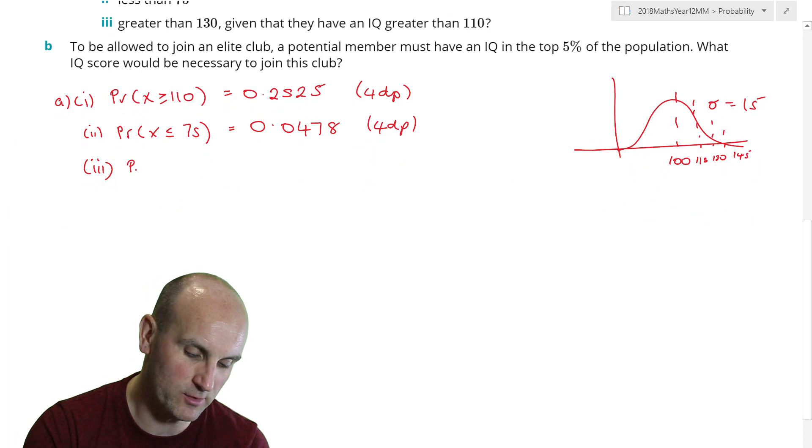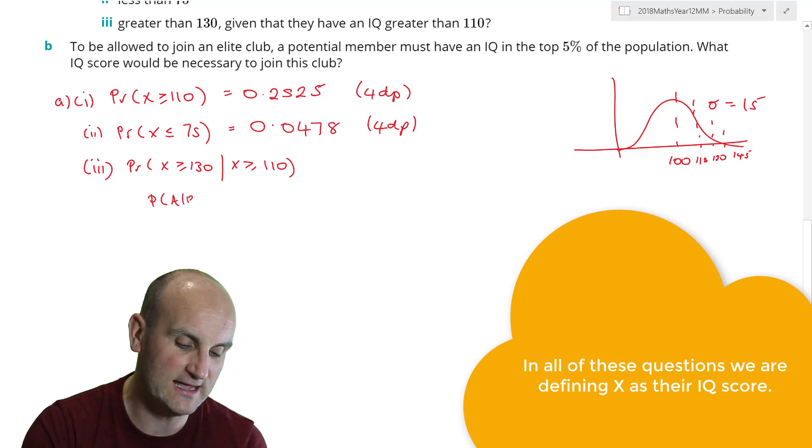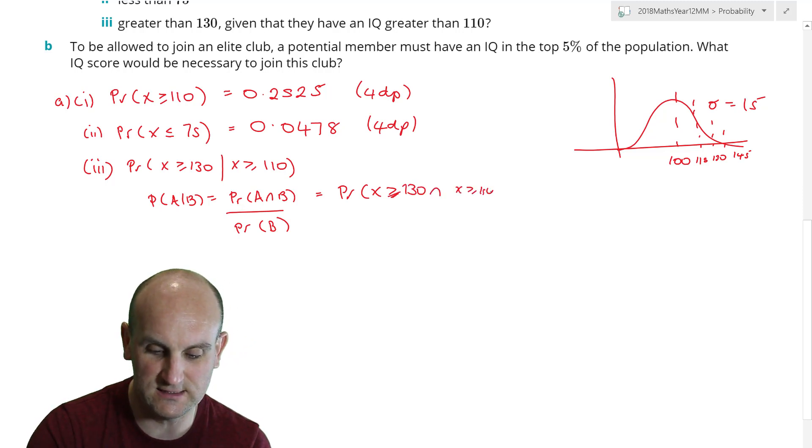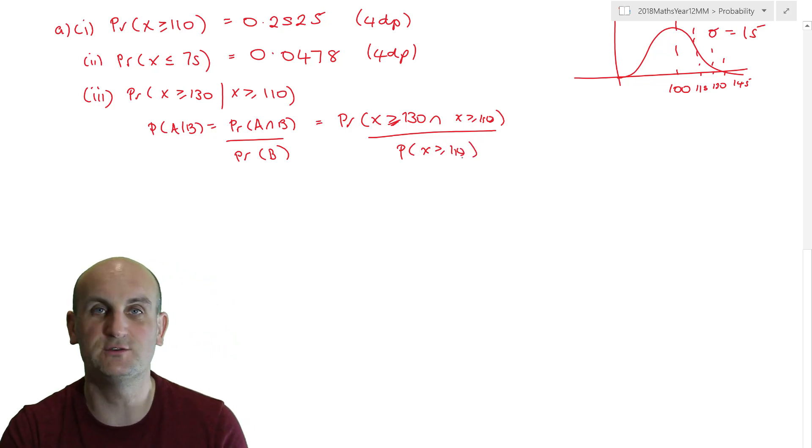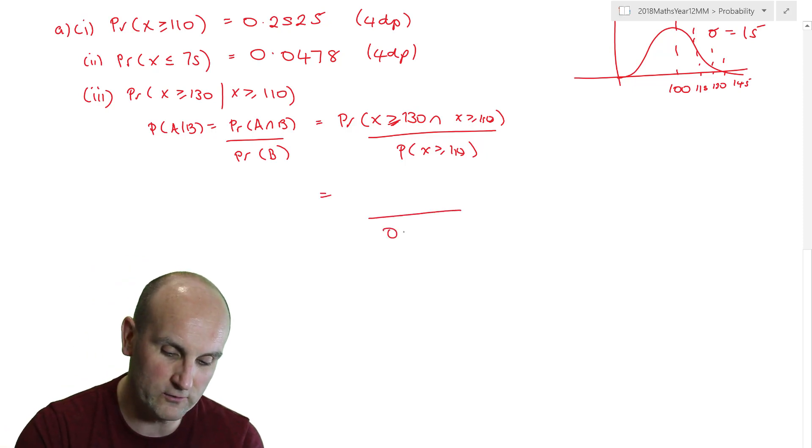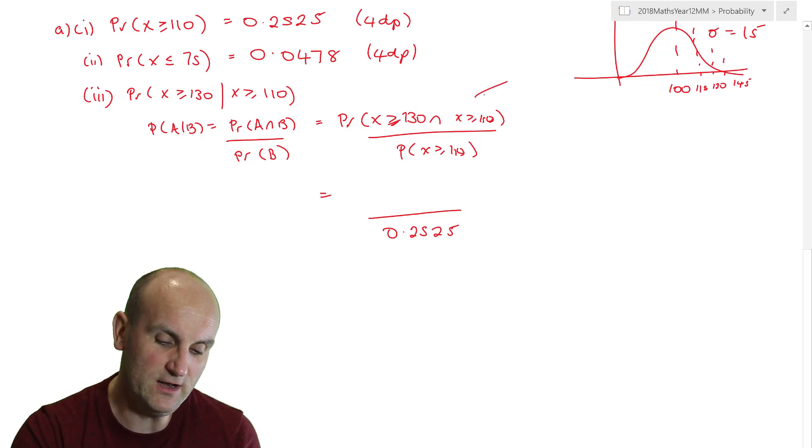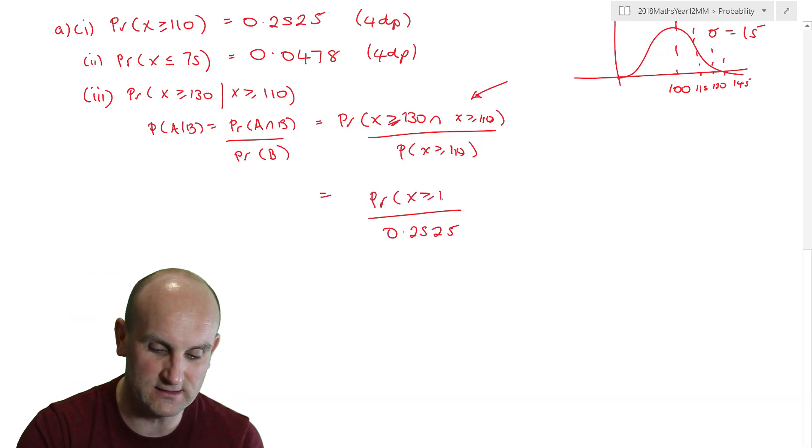Part three greater than 130. So the probability that X is greater than 130 given that they have an IQ of greater than 110. Now that's our conditional probability. And I remember that my conditional probability says that A given that B is the probability of A and B divided by the probability of B. So we're looking for the probability that X is greater than or equal to 130 and X is greater than or equal to 110. Do you see the trick of the language there? Divided by the probability that X is greater than or equal to 110. Now the good news is we've already worked out that part in part A. Now the fact that probability that X is greater than or equal to 130 and it's greater than or equal to 110 is basically just saying the probability of the X is greater than or equal to 130.